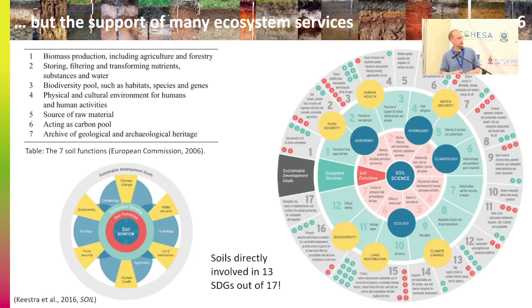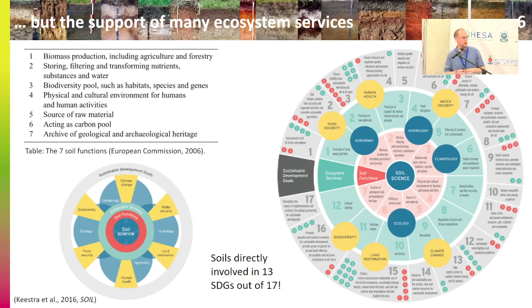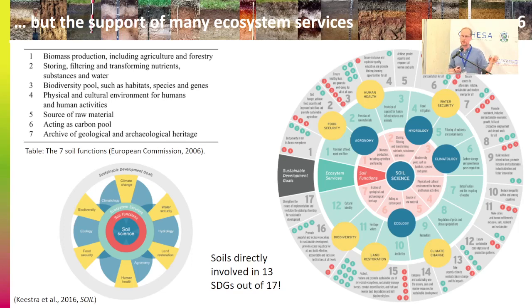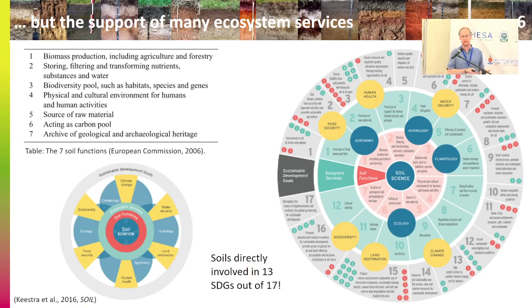In this figure, soil science is in the middle, surrounded by the seven soil functions, then the ecosystem services emerging from those functions, and on the outside are the SDGs — the Sustainable Development Goals. The ones with red dots are the SDGs where soils are directly involved. Soils are directly involved in 13 out of 17 SDGs, meaning it is basically impossible to achieve these SDGs if you don't manage your soil in a sustainable way.